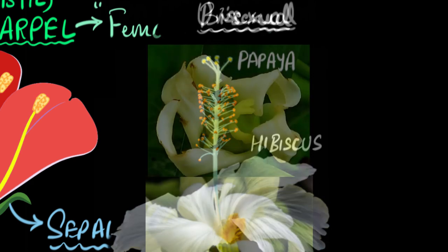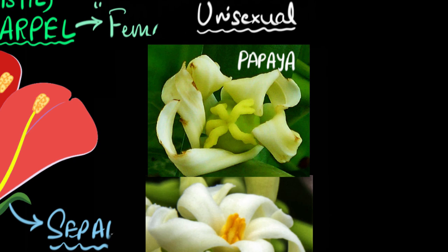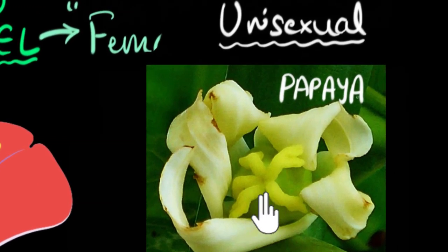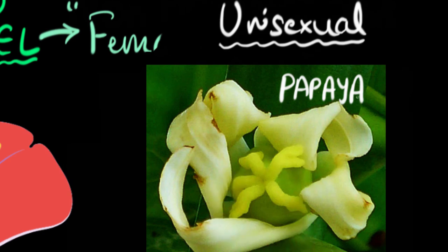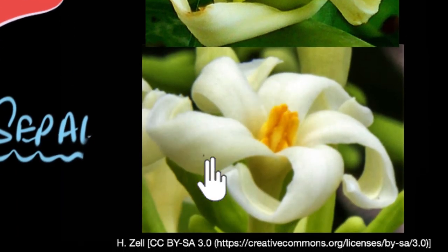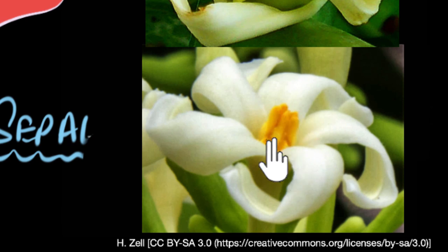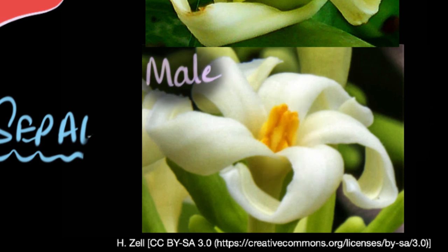On the other hand, papaya flowers are unisexual. The top papaya flower shows only carpels — only the female reproductive part — so it is called a female unisexual flower. The bottom papaya flower contains only stamens, the male reproductive part, so it is a unisexual male papaya flower.